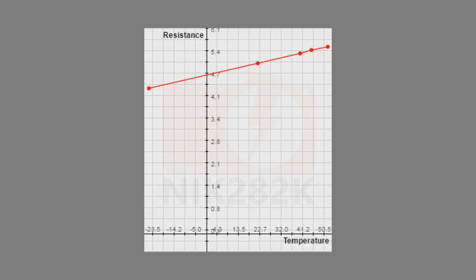Graphing the calculated resistance of the coil of wire compared to the temperature, we can see that there is a fairly linear response. Starting at minus 25 Celsius, the resistance is 4.29 ohms, up to 52 degrees Celsius where the resistance is 5.51 ohms.